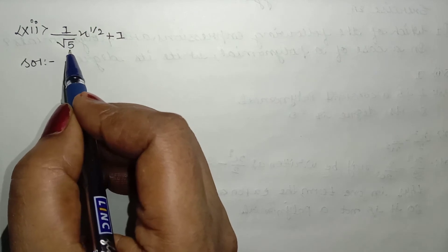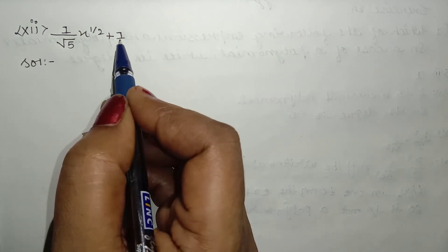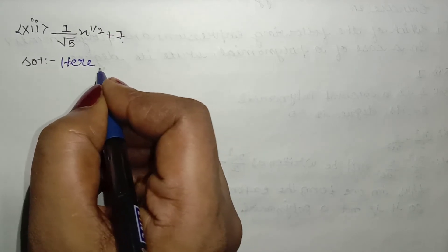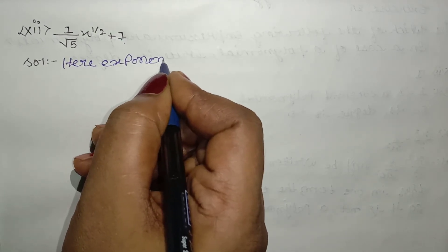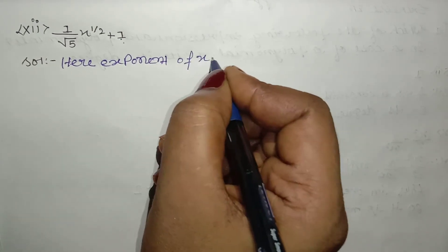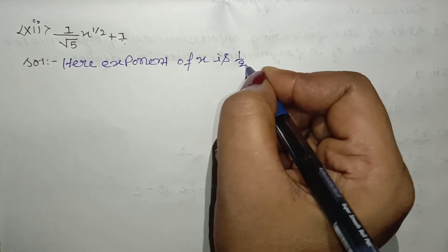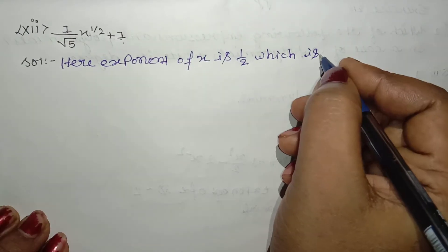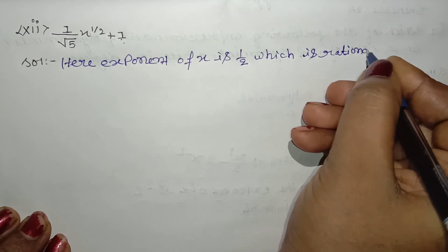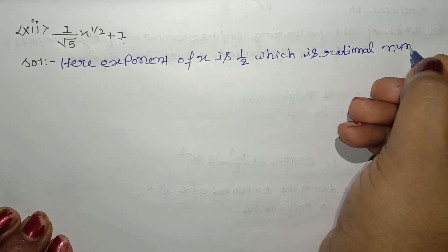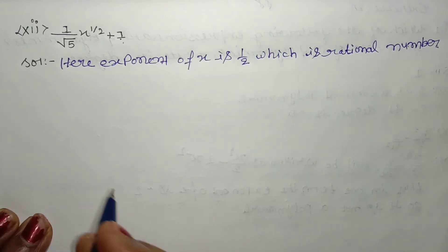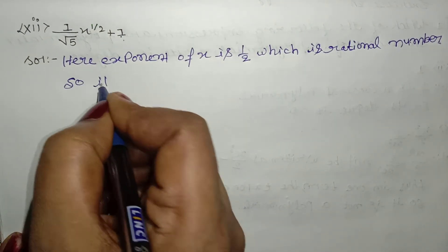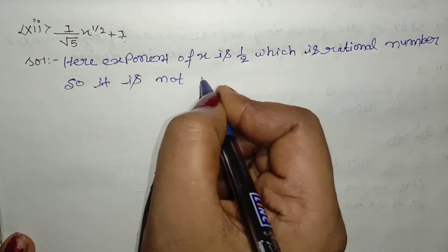Next question: 1 by root 5, x to the power 1 by 2 plus 1. Here, the exponent of x is 1 by 2, which is a rational number, so it is not a polynomial.